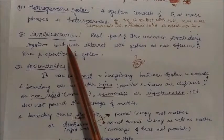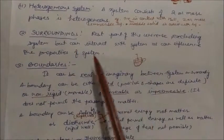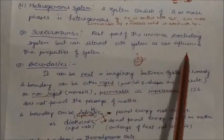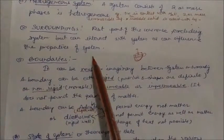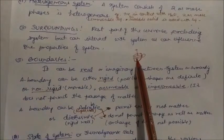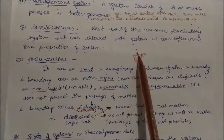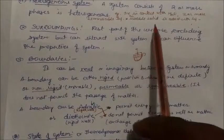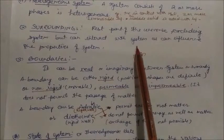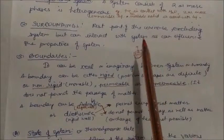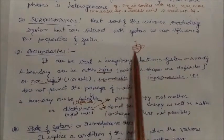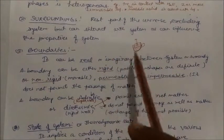The second key term is surroundings. The rest of the universe excluding the system is called the surroundings — but it can interact with and influence the properties of the system. For example, with a cup of hot milk, the energy and matter going out from the hot milk goes to the surroundings. The surroundings can be nearby or any part of the rest of the universe.